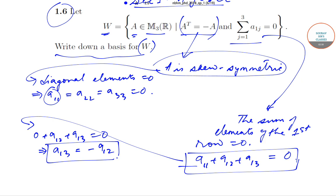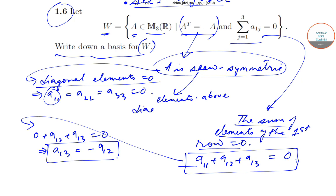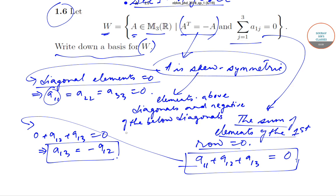We also get another condition from the skew-symmetric property: the diagonal elements are 0 and the sum of elements of the first row is 0. The overarching statement is that the elements above the diagonal are the negatives of the elements below the diagonal.